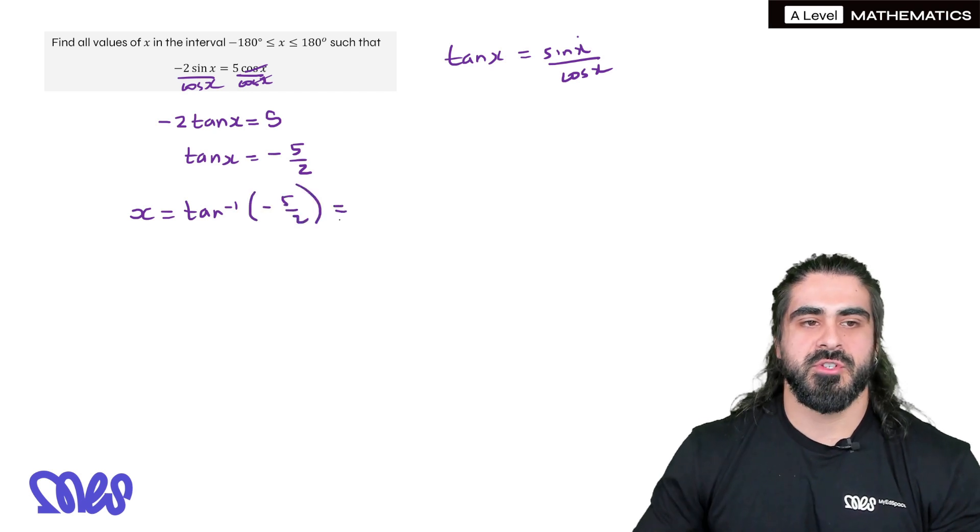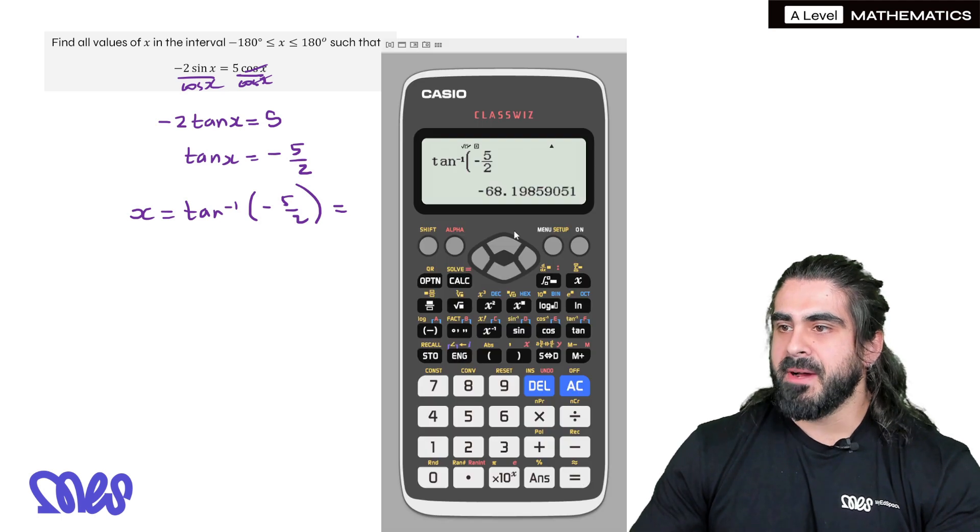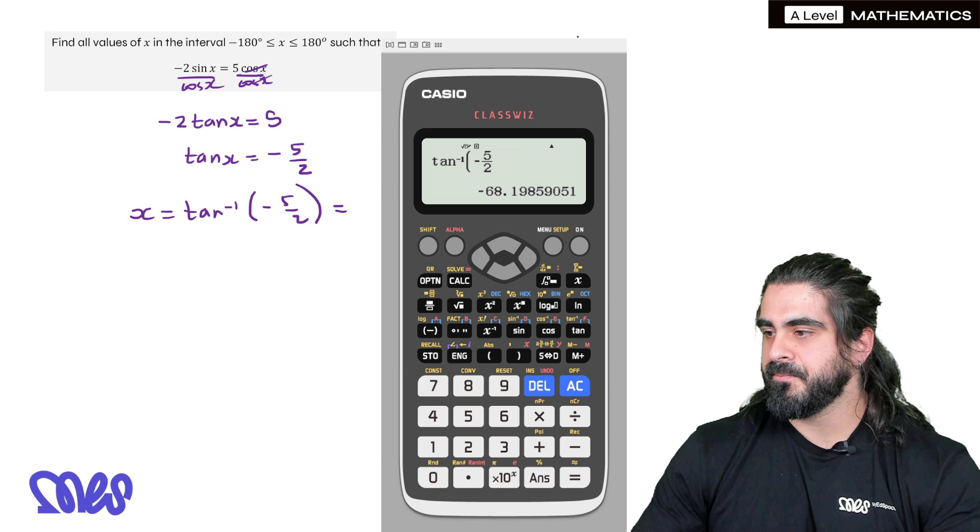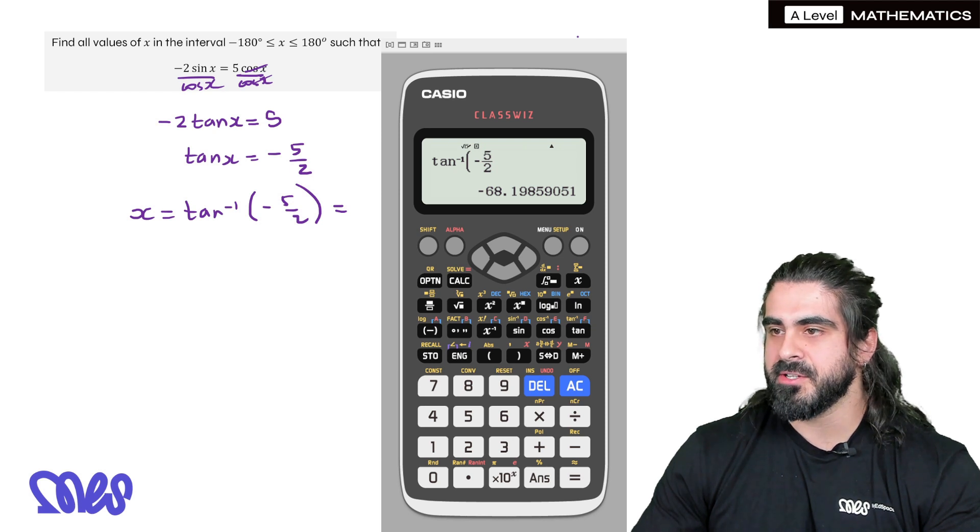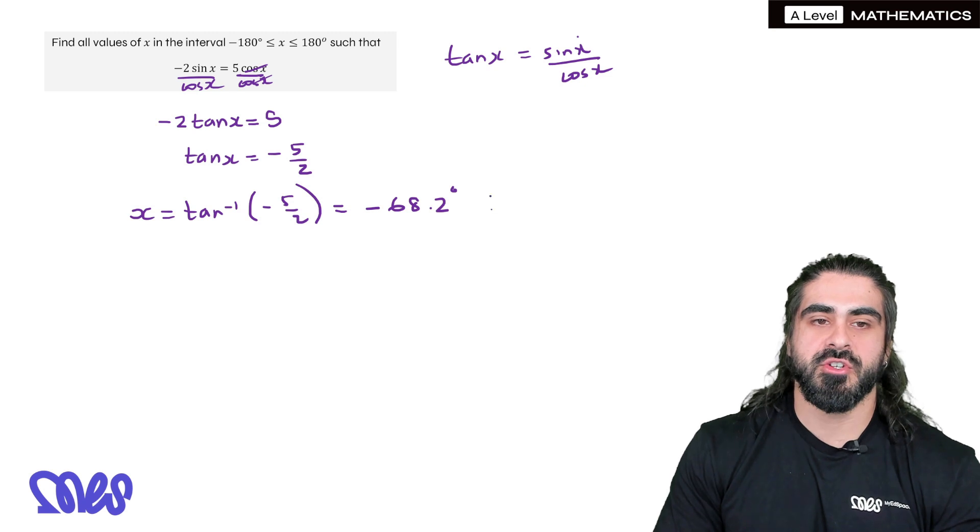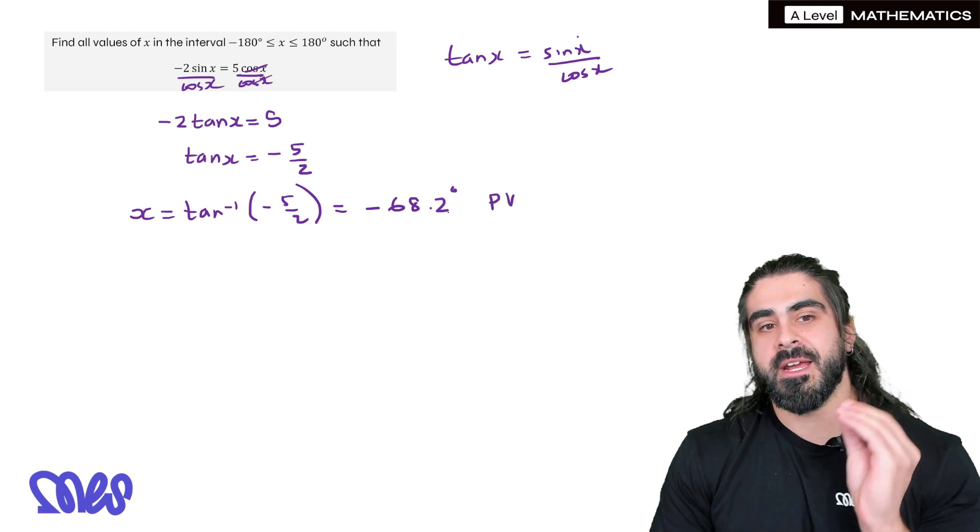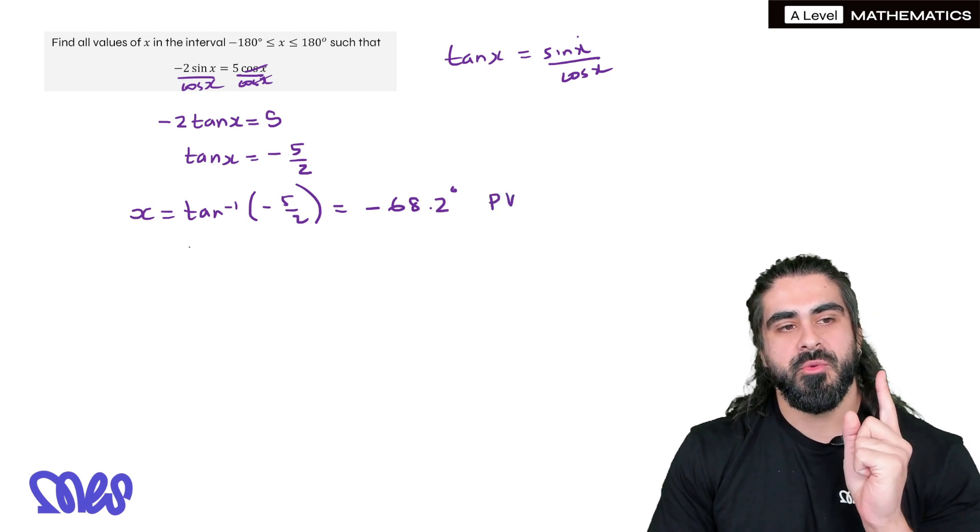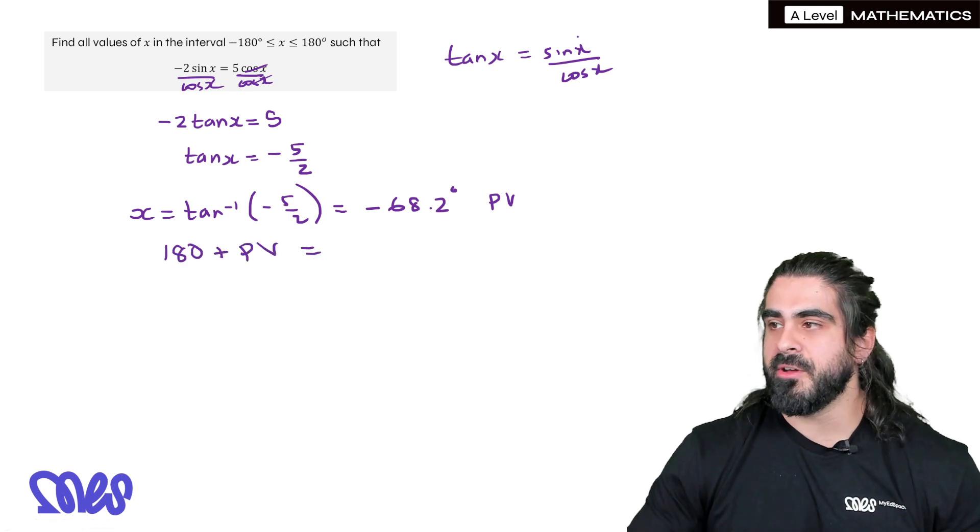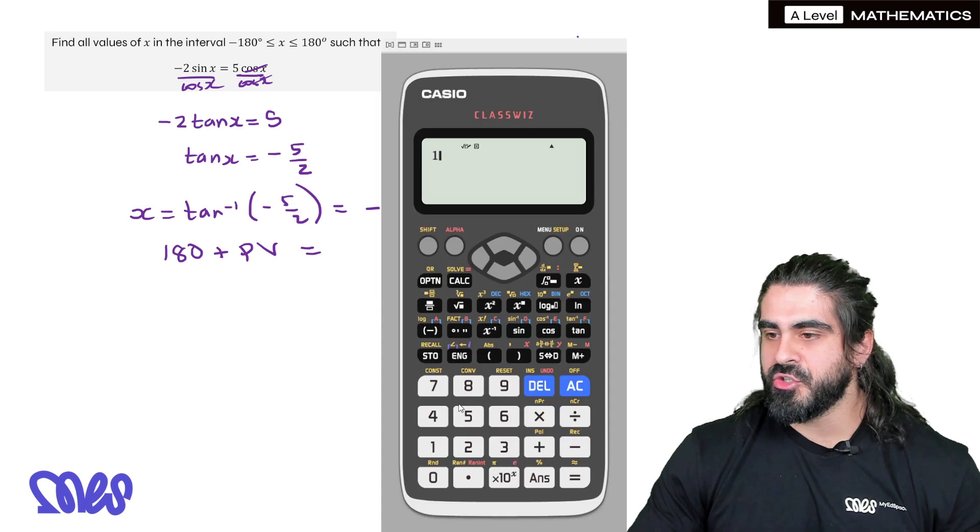So this cancels and we're left with minus two sine x over cos x is tan x equals five. Then we divide by minus two. We get tan x is minus five over two. So x then is inverse tan of minus five over two. And here I'm just going to round it. So minus 68.2 degrees or so. That's what I'm going to write down. But keep this number in your calculator. Minus 68.2 degrees. And remember, this is your primary value.